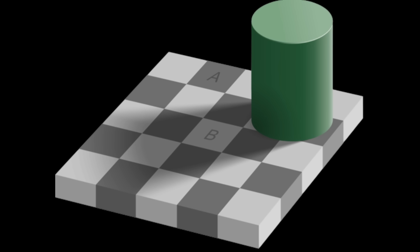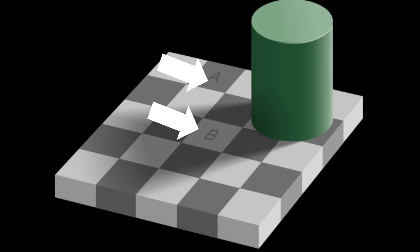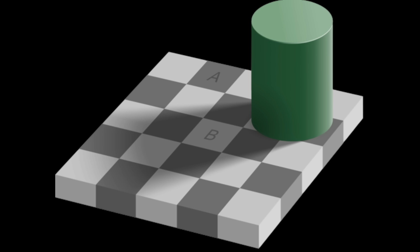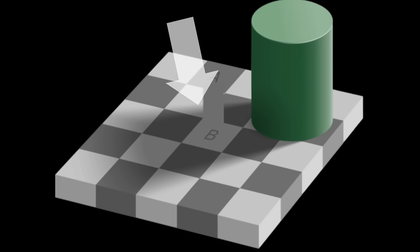Here's another illusion you've probably seen before. We have a cylinder casting a shadow on a floor of tiles. It appears that tiles A and B are different colors — A looks gray while B looks white. But when you scrutinize the image more closely, you realize that these tiles are in fact identical. The context of the scene and the interpretation we have for what's happening is changing the way we see these colors. Even now, when you know that these colors are the same, you don't see them that way.